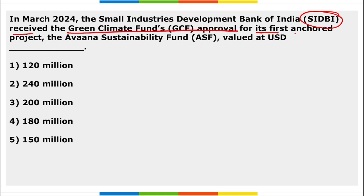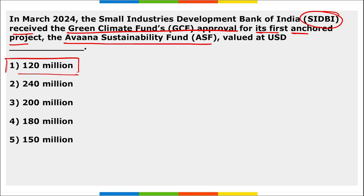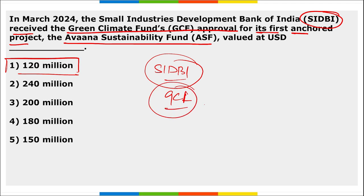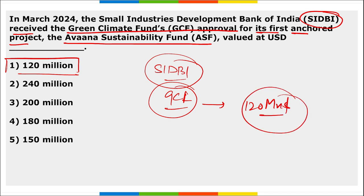In March, SIDBI received the Green Climate Fund's approval for their first anchored project — the Avana Sustainability Fund — valued at 120 million dollars. SIDBI secured the approval from the Green Climate Fund for their first anchored project, the Avana Sustainability Fund, valued at 120 million dollars.